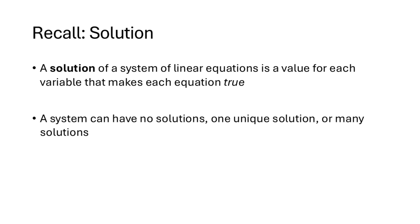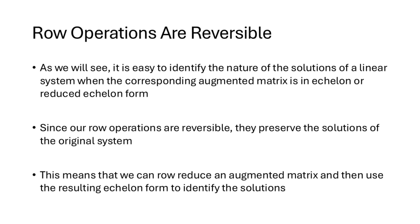Let's recall the definition of solution that we learned back in lecture 1. A solution of a system of linear equations is a value for each variable that makes each equation true. A system could have no solutions, one unique solution, or more than one solution. Recall also from our row-reduction process that our row operations are reversible. That means that when we perform row operations on our linear systems, the solutions are preserved. Any solutions that exist for the reduced system must have also been solutions of the original system. So we can row-reduce an augmented matrix and use the resulting echelon form to identify the solutions of the original system of linear equations.